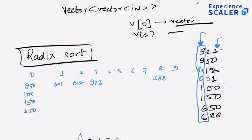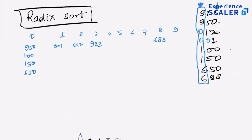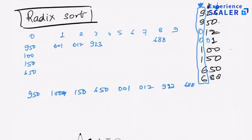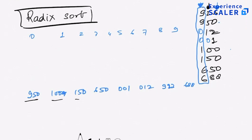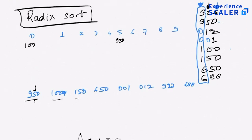After appending, all numbers are sorted by their last digit. The result is: 950, 100, 150, 650, 001, 012, 923, 688. Now repeat the same process for the second digit: 950 goes to bucket 5, 100 to bucket 0, 150 to bucket 5, 650 to bucket 5, 001 to bucket 0, 012 to bucket 1, 923 to bucket 2, and 688 to bucket 8.